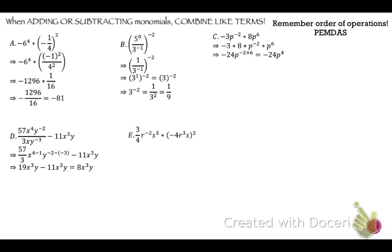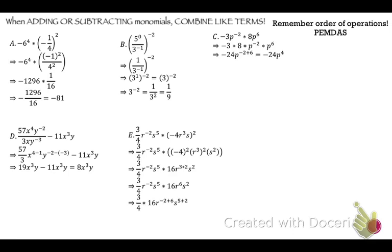Let's do 3/4 r to the negative 2nd s to the 5th times negative 4r cubed s, all squared. Deal with that exponent first: that's negative 4 squared, r cubed squared, s squared. Negative 4 squared is 16. When you raise a power to a power, you multiply, so that's r to the 6th and s squared. Rearranging: 3/4 times 16 times r to the negative 2 plus 6 times s to the 5 plus 2. That gives us 12r to the 4th s to the 7th.